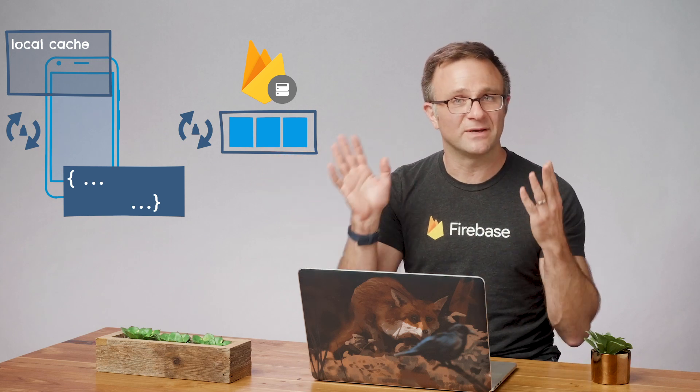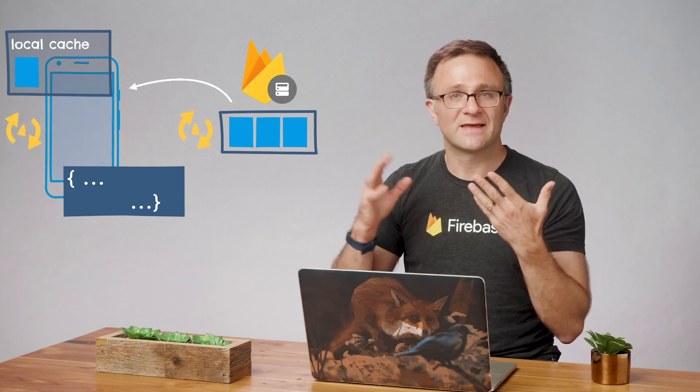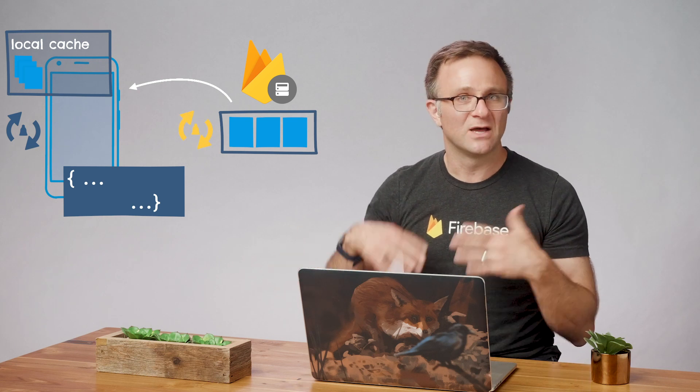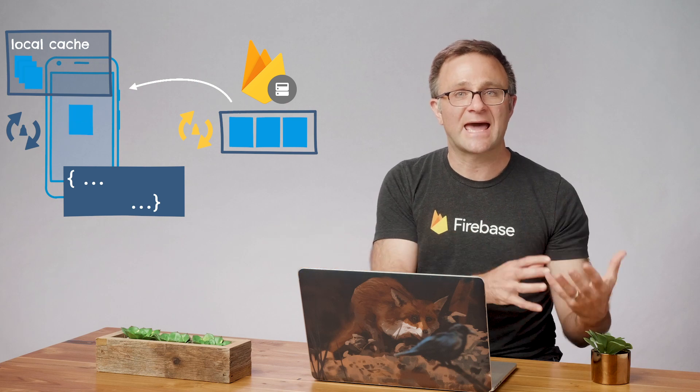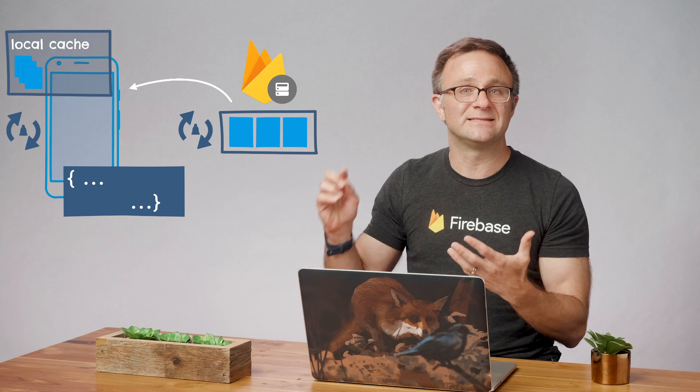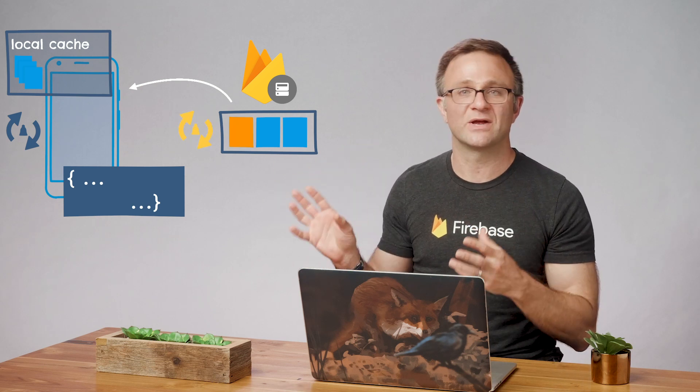The first time you ask to listen to a document or a query, you get back all the data you request. So if you ask for one specific document, you get back the contents of that document. If you ask for the top 20 Japanese restaurants in San Francisco, you get back those 20 restaurants. But from that point on, your client will only get notified when there's a change in those documents — whether that's a change in the document itself, a restaurant gets added or removed, or they change their order in that query. Only the documents that have changed will be sent over — so if Ray's Ramen changes their name to Gary's Gyoza, what you get back under the hood is one document representing the restaurant that's changed.